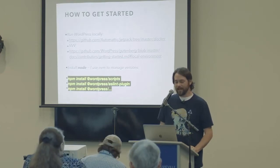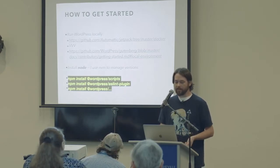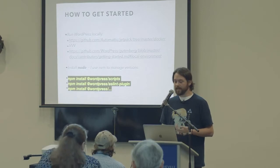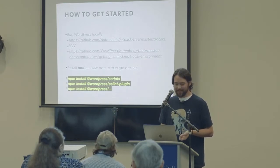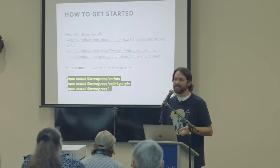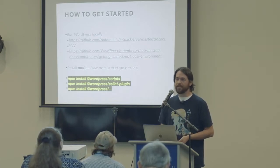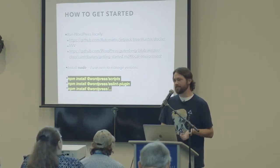How can you get started using WordPress packages? First, I suggest installing WordPress locally. A lot of people like Local by Flywheel. I use the Jetpack Docker environment — it's pretty handy for my day to day. VVV — Varying Vagrant Vagrants — is something a lot of people use. Gutenberg itself has a Docker environment you can spin up; you don't have to have anything installed except Docker. It's really about what you like to do and the kind of projects you work on.